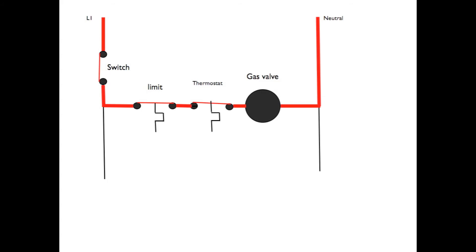And the last one, all the switches are closed, we're calling for heat, the limit switch is closed, the system switch is closed, so the gas valve is energized.